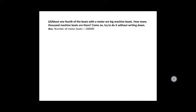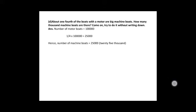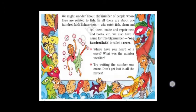About one-fourth of the motor boats are big machine boats. How many thousand machine boats are there? Number of motor boats is one lakh. One-fourth of one lakh: 1/4 × 1,00,000 = 25,000. So the number of machine boats is 25,000.